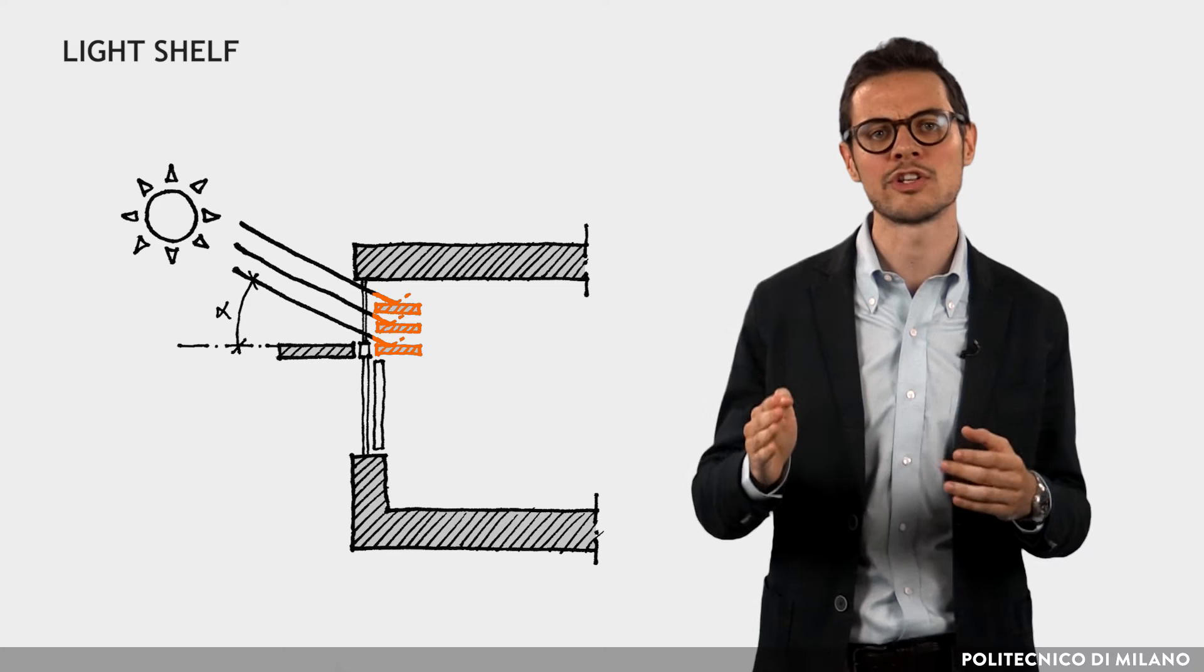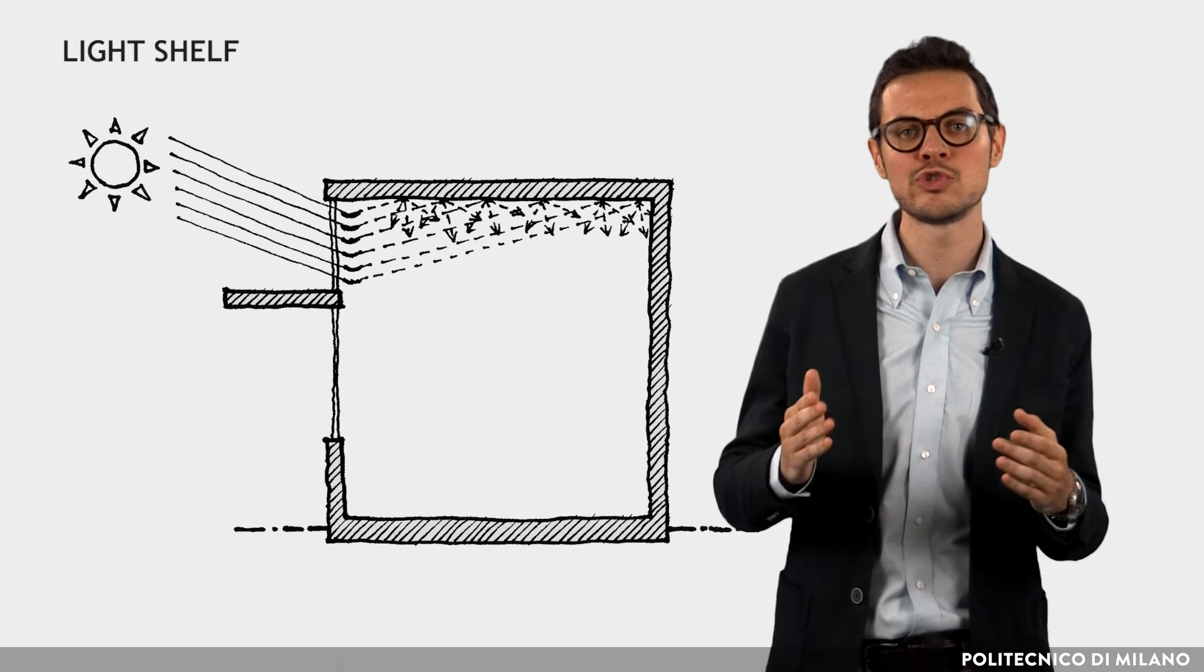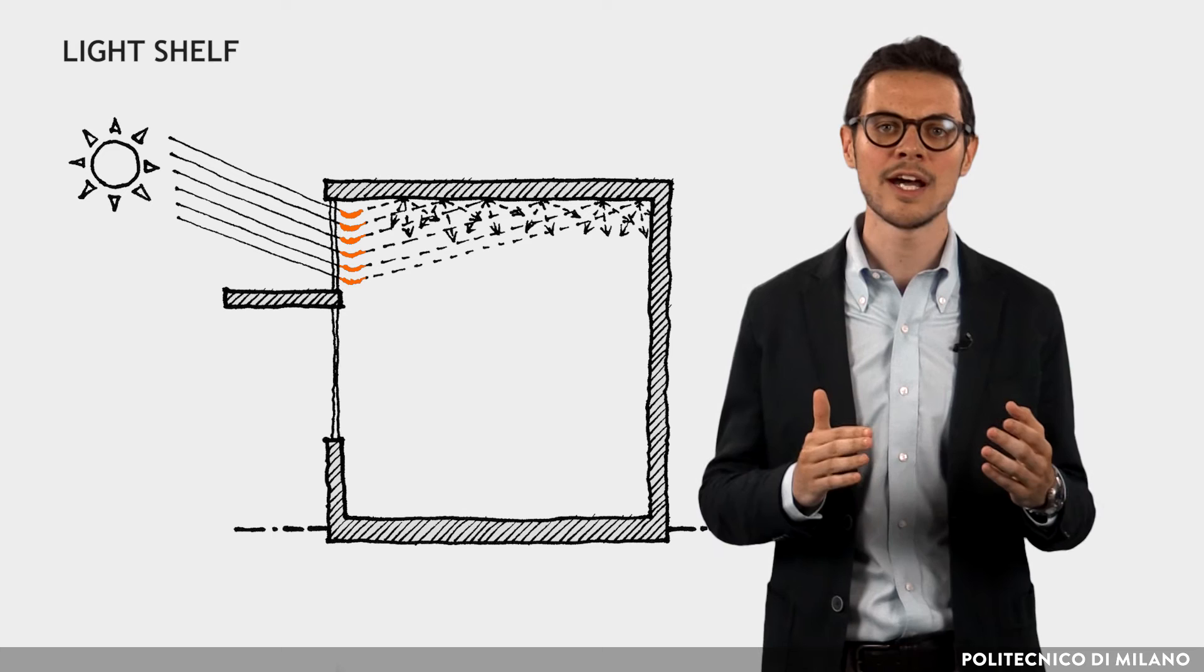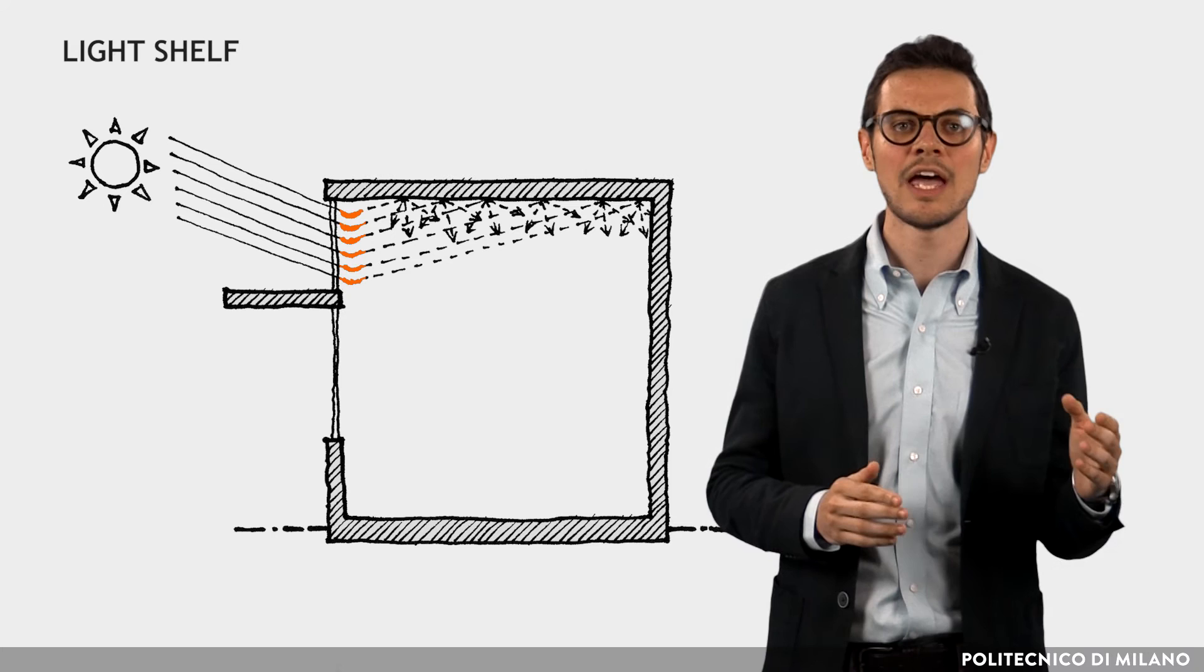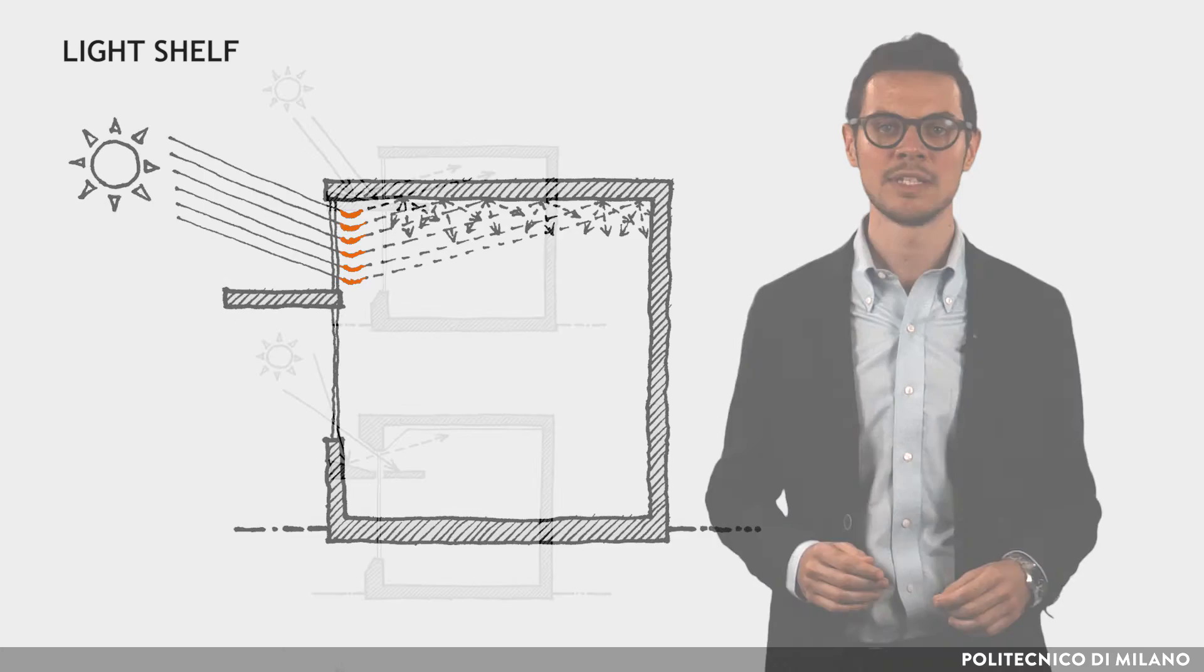In this case, a series of smaller shelves, properly spaced, can be used. An alternative solution consists of reflective blades, fixed or mobile, on the inside or outside of the glass strip. In this case, the outer shelf has the sole function of solar protection for the underlying glass.